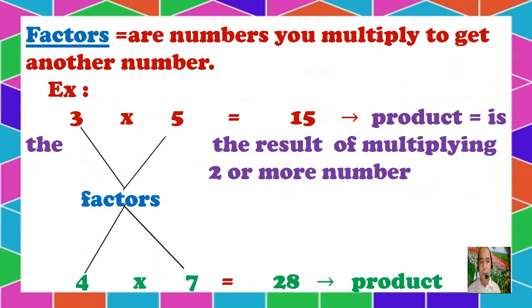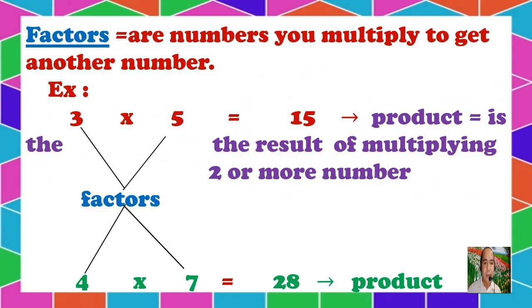Next example, we have 4 times 7. When you multiply 4 times 7, it will give a product of 28. So if you are asked what are the factors of 28, one of the factors of 28 are 4 and 7. When you are asked what are the factors of a particular number, you have to think of 2 numbers, 2 pairs of numbers that will give you the number being asked. If asked about the factor of 15, multiply 3 times 5. If asked about the factor of 28, you will have 4 and 7.